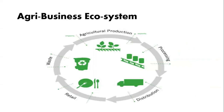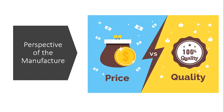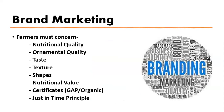The third factor is brand marketing. After manufacturing, the selling of products involves brand marketing. When manufacturers talk about brand marketing, farmers also have to consider several factors: nutritional quality of agricultural goods — whether vegetables or other things — and ornamental quality, meaning the produce should be visually attractive to the consumer or buyer.